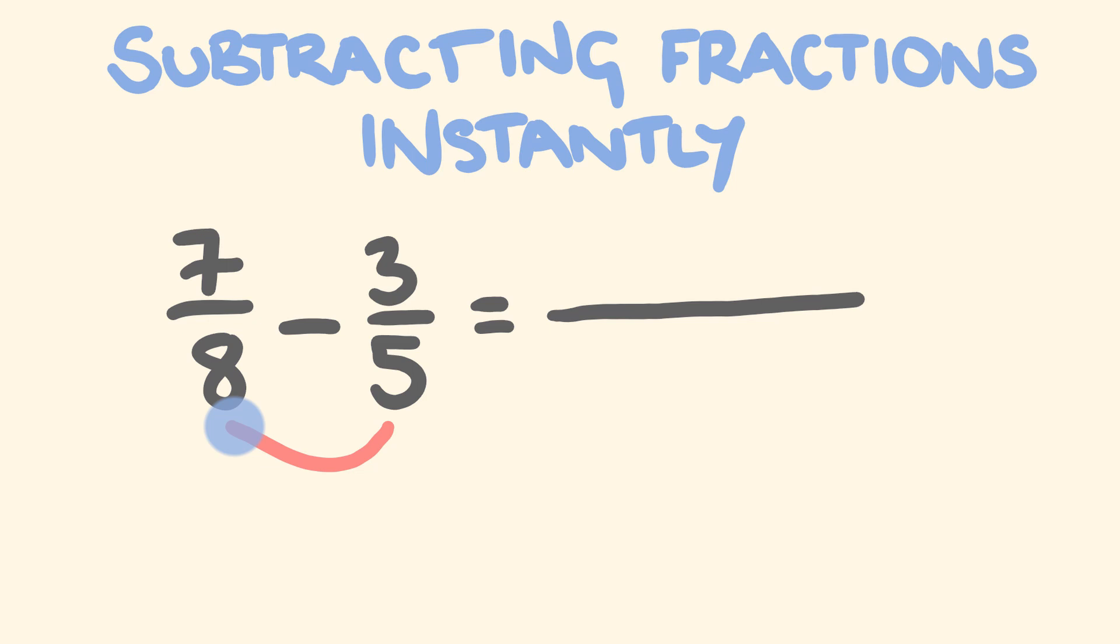Not mess around by working at common denominators. So first off, let's multiply these two denominators. Eight times five is equal to forty. The next thing we're going to do is we're going to start in the top left here and we're going to multiply by the bottom right. Seven times five is thirty-five. We're going to subtract. The last thing we're going to do is we're going to go eight times three. Three eights are twenty-four.